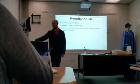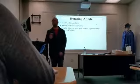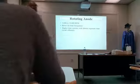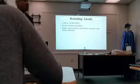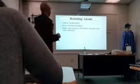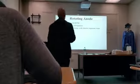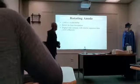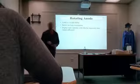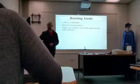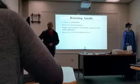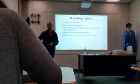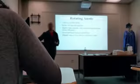The rotating anode spins at 3,600 to 10,000 revolutions per minute. It is good for heat dissipation, allows higher tube currents with short exposure times, and has increased heat loading capabilities because it's spinning.